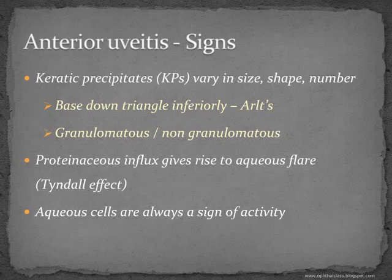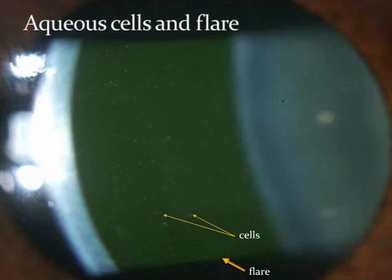Aqueous cells are always a sign of activity. Iridocyclitis can be acute, chronic, recurrent, or in a remission phase, and whenever there are cells present, that is an indication of active disease. Here is a slit-lamp photo: on the left side is the cornea, and on the right side the bluish area is the lens. In between is the light beam travelling through the aqueous — the thicker arrow shows the light beam, demonstrating aqueous flare. The thinner, longer arrow is pointing towards dust-like particles, which are the aqueous cells — nothing but white blood cells.